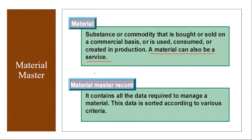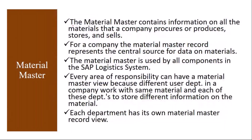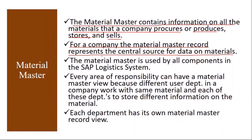Now, what is Material Master? It contains all the data required to manage a material. In the Material Master you maintain information about that material, sorted according to various criteria. The Material Master contains information on all the materials that a company procures, produces, stores, and sells. For a company, the Material Master record represents the central source for data on materials.